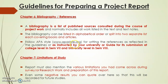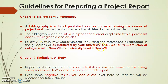Guidelines for bibliography and references: a bibliography is a list of published sources consulted during the course of project work, and normally includes all work listed in the text and text notes. The bibliography can be listed in alphabetical order, or split into two separate lists each covering books and articles — like how in any textbook after individual chapters there will be references. Either splitting or after total completion of the project, you can follow APA guidelines for that as instructed by your guide for submission at college in semester 8.